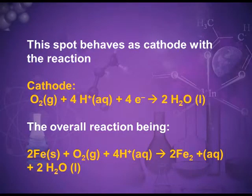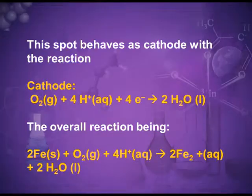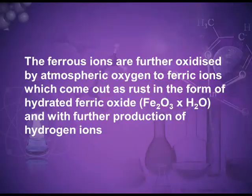Oxidation takes place at anode and reduction takes place at cathode. Oxidation is the loss of electrons and reduction is the gain of electrons. Iron is oxidized to the ferrous state, which is further oxidized to the ferric state. The iron in the ferric state then reacts with water to form ferric oxide. Chemically, rust is Fe2O3·xH2O.